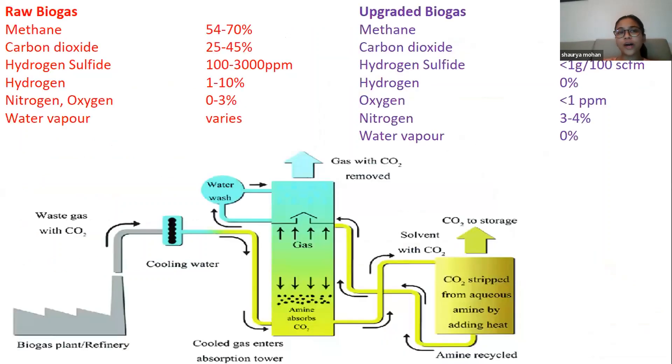So this raw biogas, as you can see, has a methane composition of 54 to 70% and carbon dioxide is 25 to 45%, which is a large amount of carbon dioxide and this lowers the calorific value of the biogas. So this upgraded biogas has a composition of 90% methane, about 3 to 4% of carbon dioxide in it.